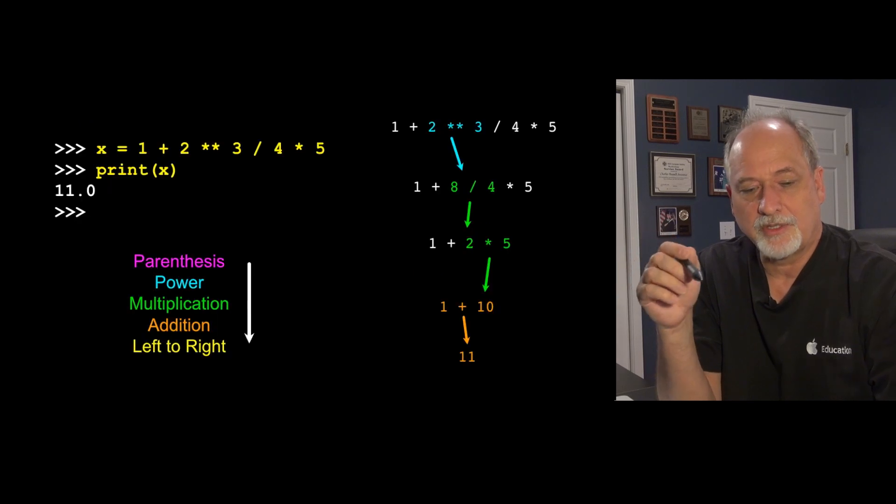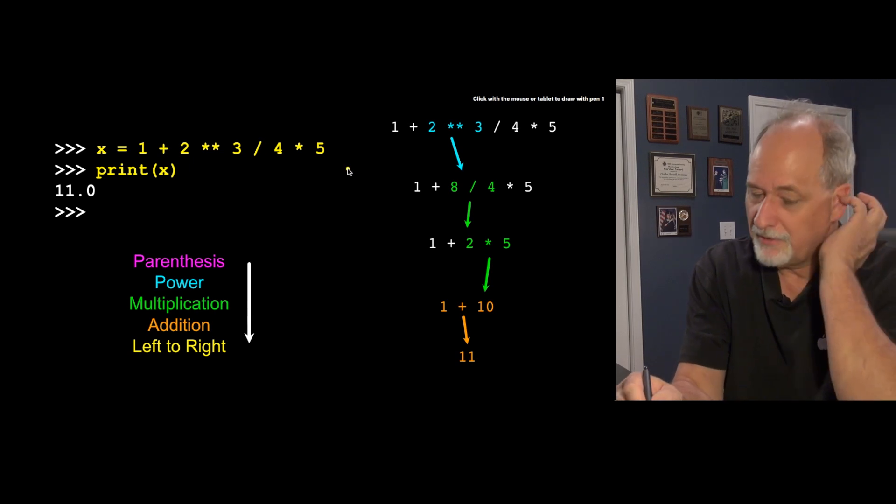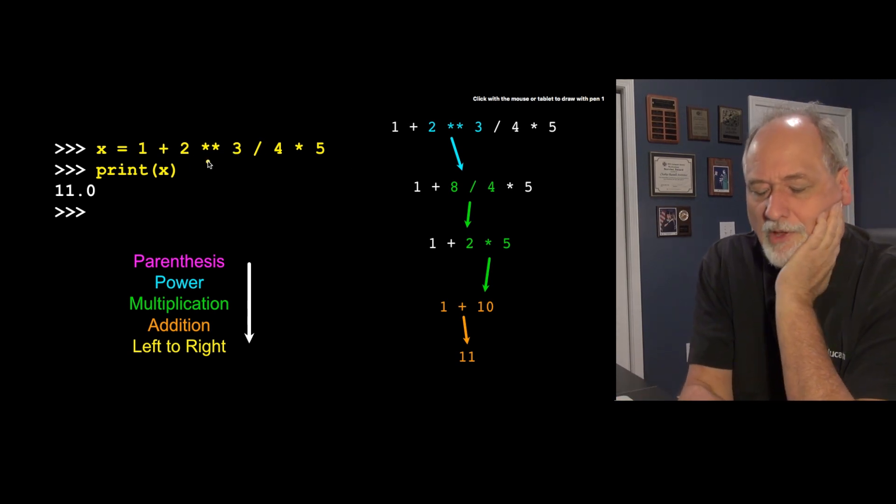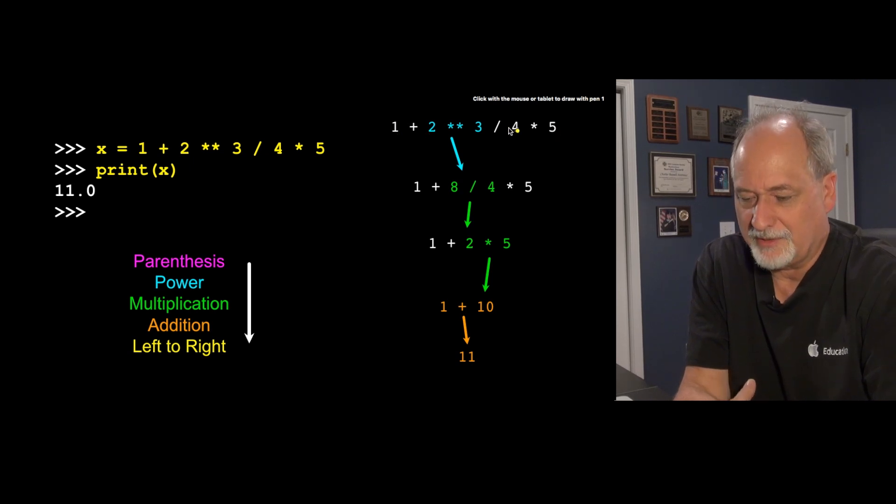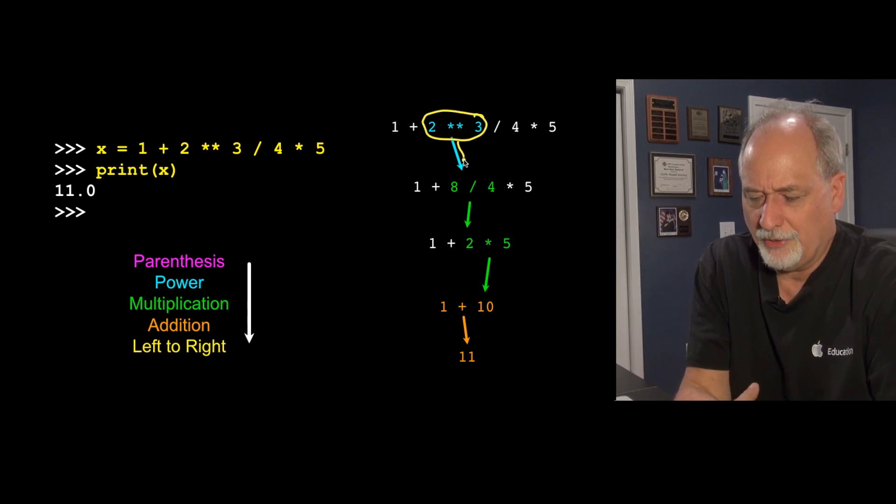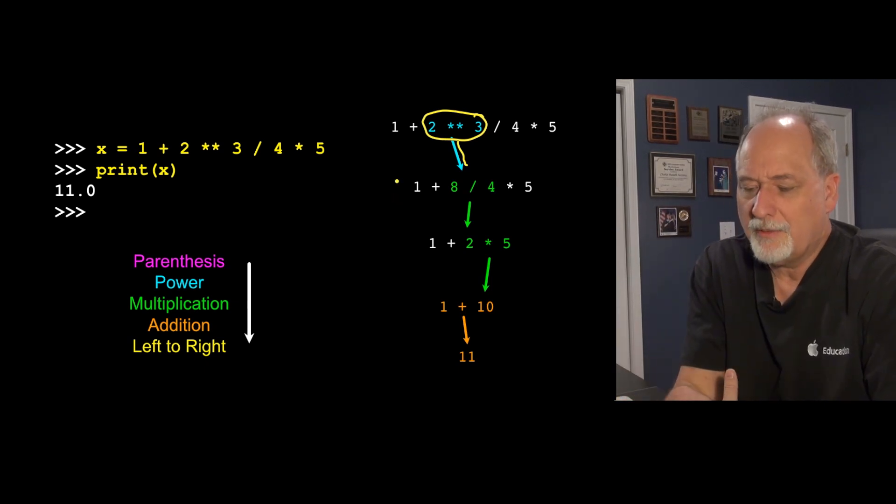So let's see an example of how this works. If we take 1 plus 2 to the 3 power divided by 4 times 5, and we print out what comes out of this. The way I did this when I was taking exams many years ago is I'd write it all down and I'd look for the highest precedence thing. Exponentiation is the first one, so we're going to take this, and that's going to be 8, 2 to the 3rd power. Then I'd rewrite the whole thing with the 8 there, and now I'm looking for multiplications.